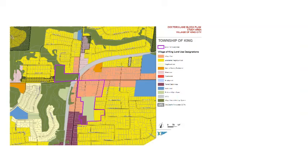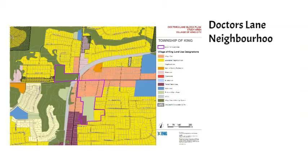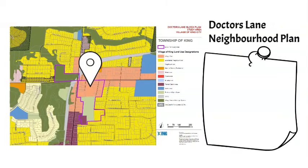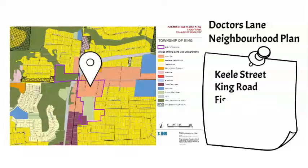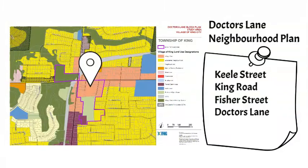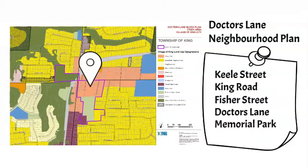In King City, the neighborhood plan is proposed to be focused around Doctor's Lane and includes lands located in the southeast corner of the village, including lots with frontages on Keele Street and King Road, and lots that front onto Fisher Street and Doctor's Lane. The study area is also proposed to include municipal lands such as Memorial Park and Wellesley Park.